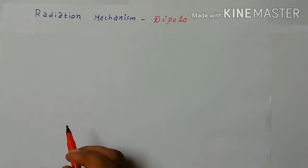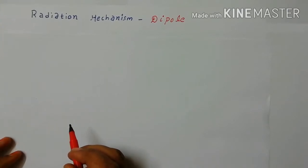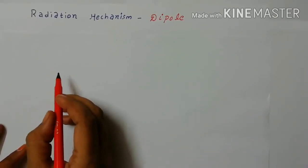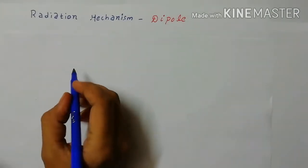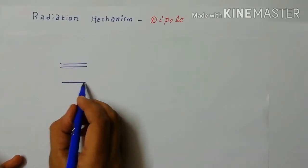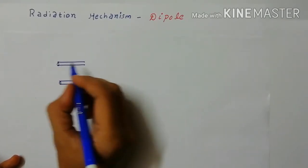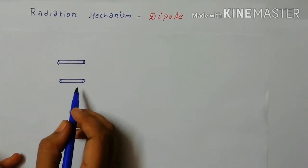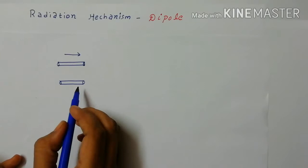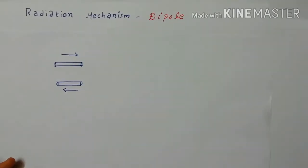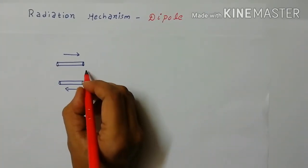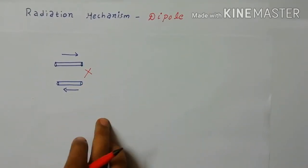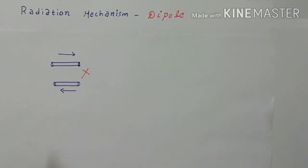Hello viewers, in today's class we are going to see the concept of radiation mechanism in a dipole. Before going to this concept, I'll give a quick review of how the dipole was actually designed. Initially, we have two parallel conductors arranged straight and parallel, with a source applied. The current flows in opposite directions in each conductor, so the net total current always cancels out and we cannot generate any outward radiation. This concept is used in transmission lines.